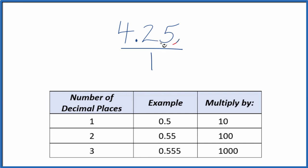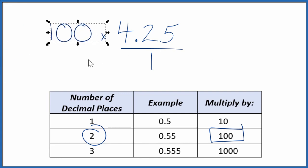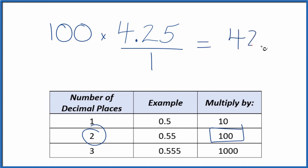When I see I have two places after the decimal, I know I'm going to need to multiply by 100, and that'll give me a whole number. So I multiply 100 times 4.25, and that gives me 425 — that's our whole number.